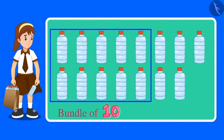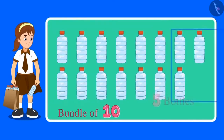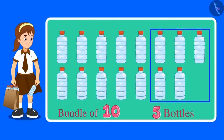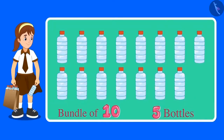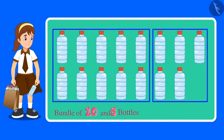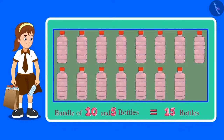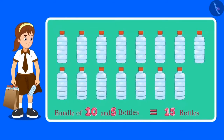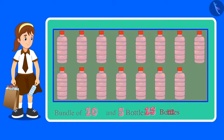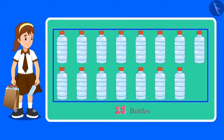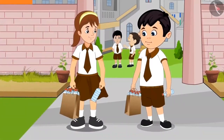These are 10 bottles, that is one bundle of 10. And there are 5 more bottles. So, a bundle of 10 and 5 are 15 bottles. This means that Aarti has collected a total of 15 bottles. Even you counted in the same way, right?